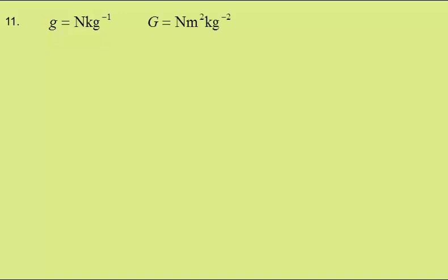In question 11, we're asked for the correct units for little g squared over big G. Gravitational field strength little g is newtons per kilogram, and the gravitational constant big G is newtons meters squared kilogram to the minus 2.